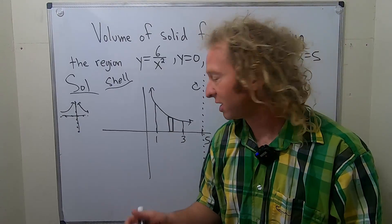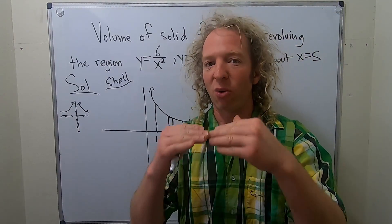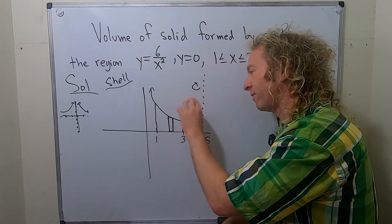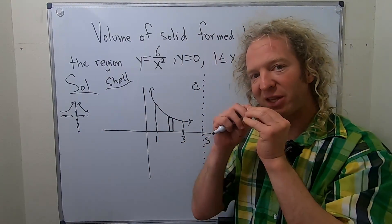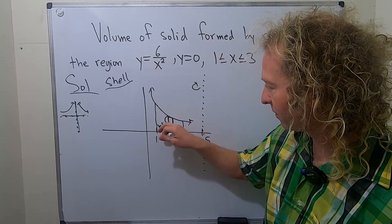Okay, so h of x, in this case, by the way, it's a vertical rectangle. So it's a function of x. Horizontal rectangle, function of y. So it's a vertical rectangle. So you have functions of x. h of x is the length of your rectangle. So this piece here is h of x.